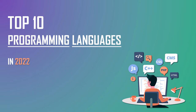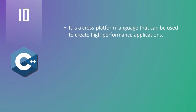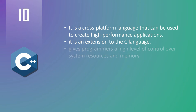At number 10 we have C++. C++ is a cross-platform language that can be used to create high performance applications. It was developed by Bjarne Stroustrup and it is an extension to the C language. C++ gives programmers a high level of control over system resources and memory. It is one of the world's most popular programming languages.